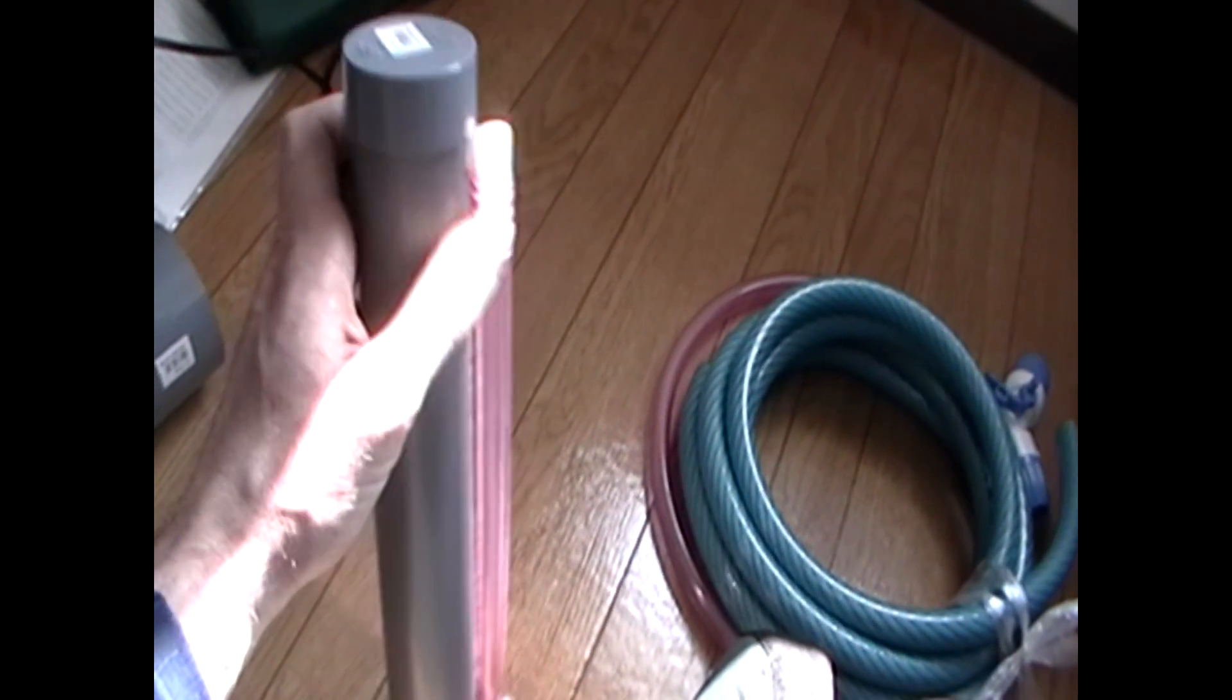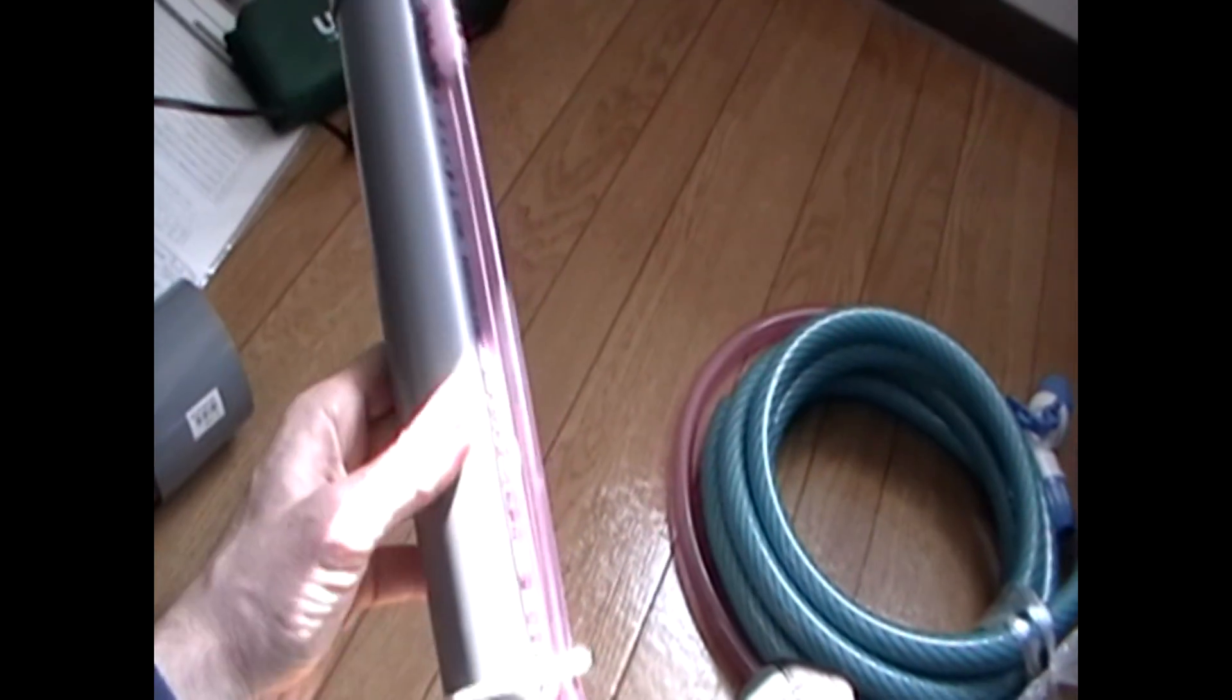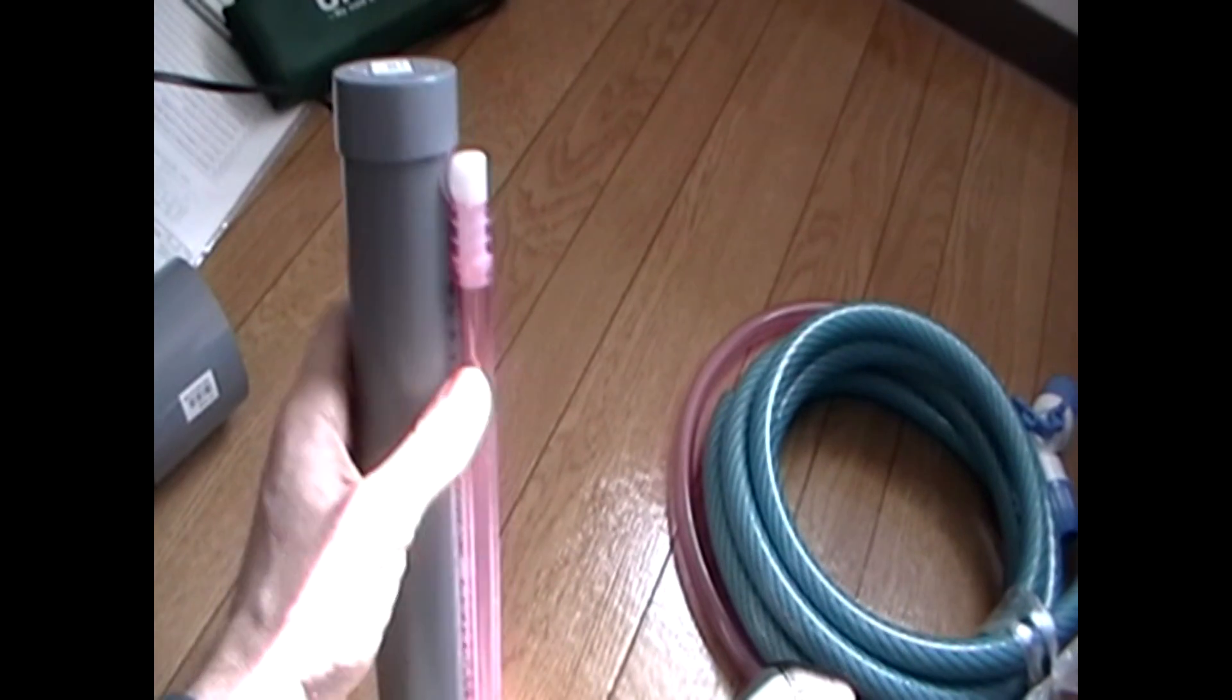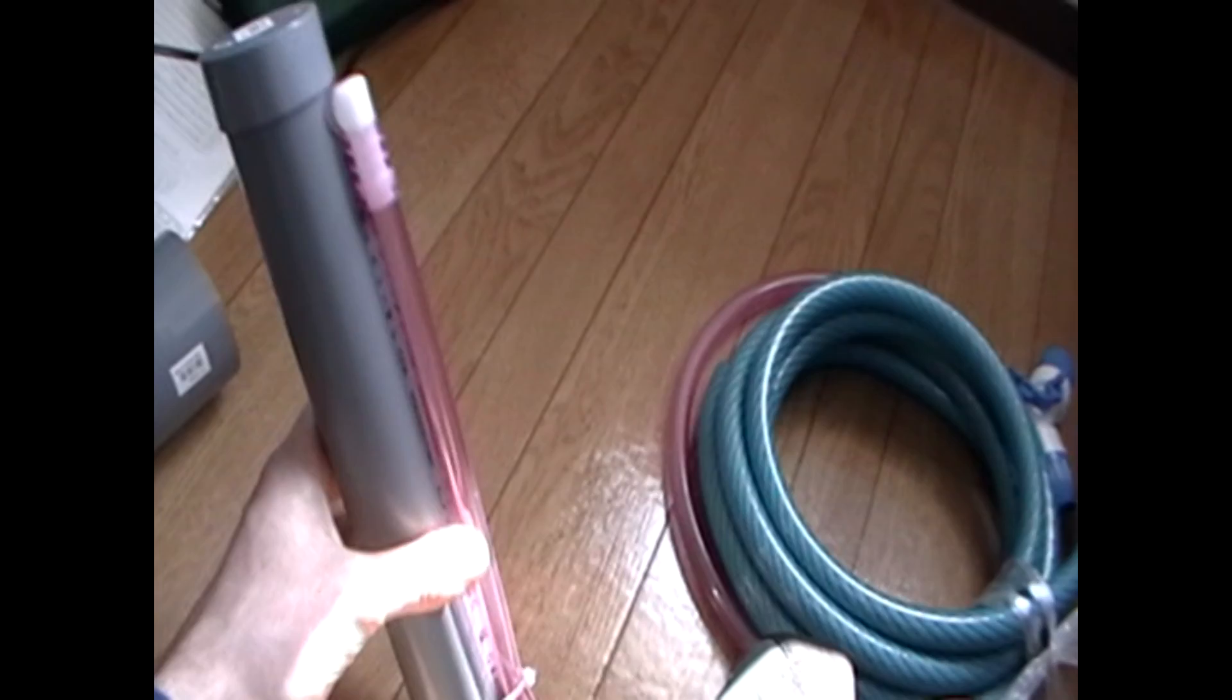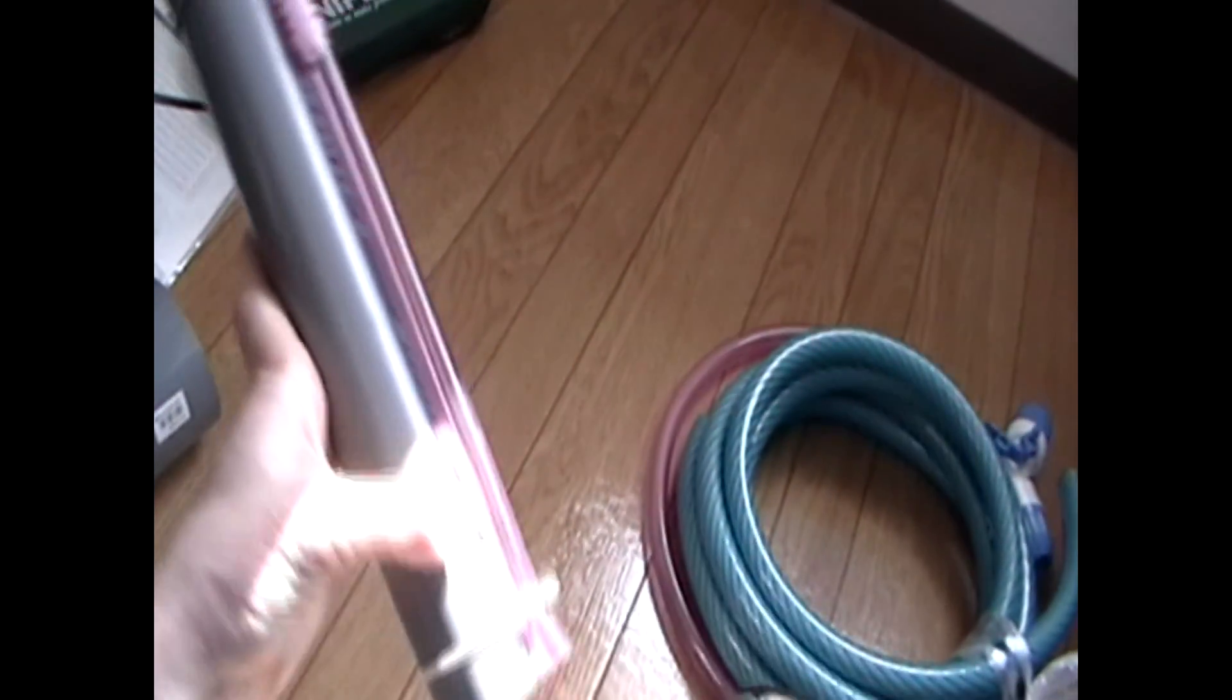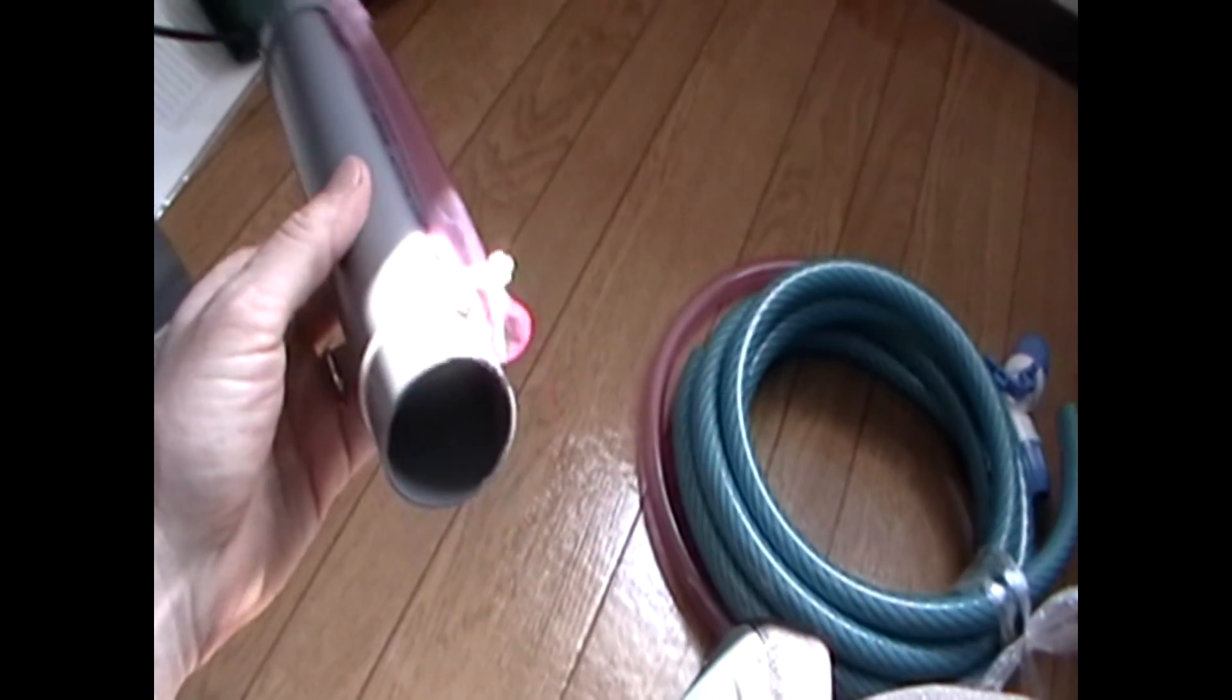And without any glue or gaskets or anything, this bell siphon works. I've tested it. So I think it's good to get a larger diameter of this pink pipe because you want to be able to really suck in a lot of air to break the siphon. And then also the larger diameter you have here helps draw more water in so you get a faster drainage.